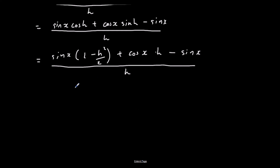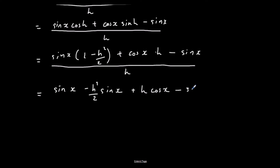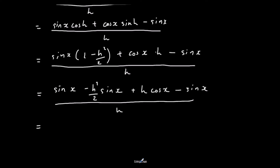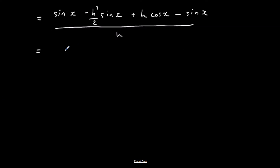Now expanding the brackets: sine(x) times 1 is sine(x); sine(x) times minus h²/2 is minus h²/2 · sine(x); h times cos(x) is h·cos(x). We still have minus sine(x), all over h. Simplifying, sine(x) minus sine(x) cancels, leaving minus h²/2 · sine(x) plus h·cos(x), all over h.